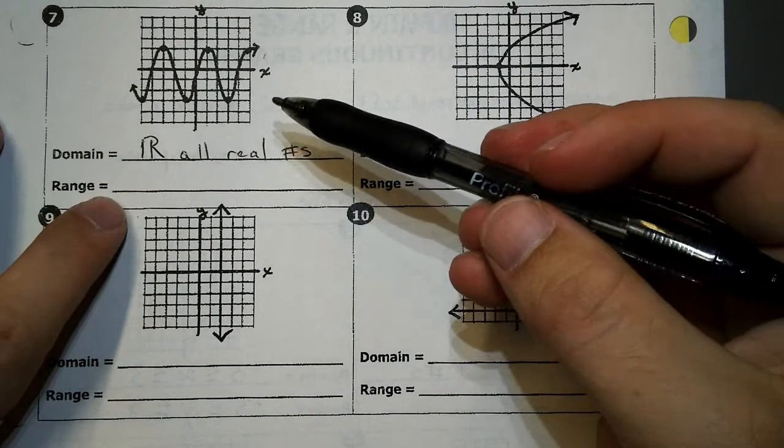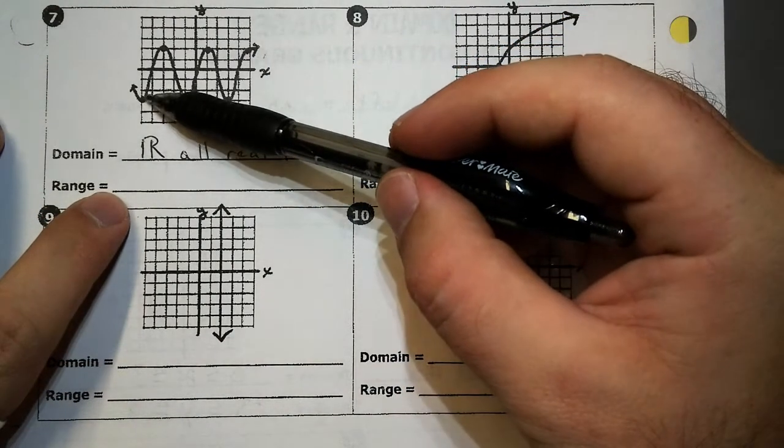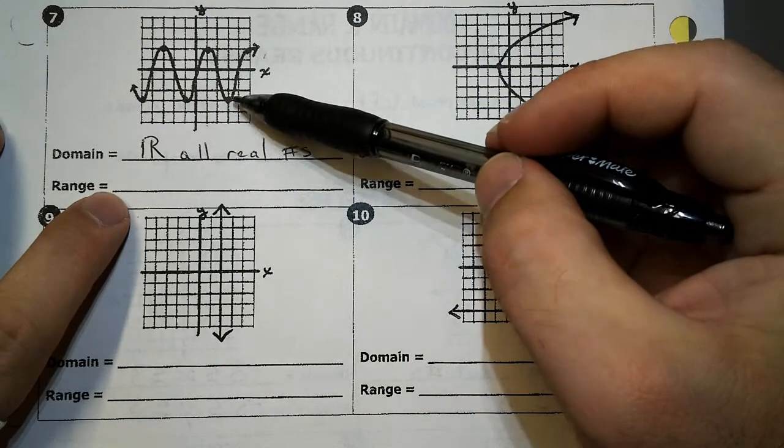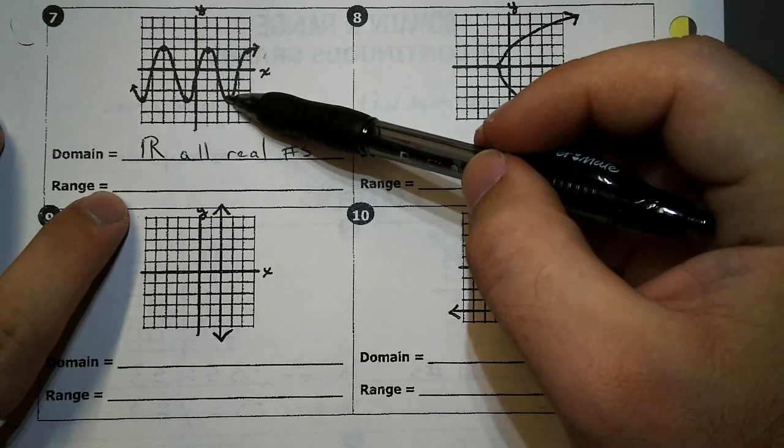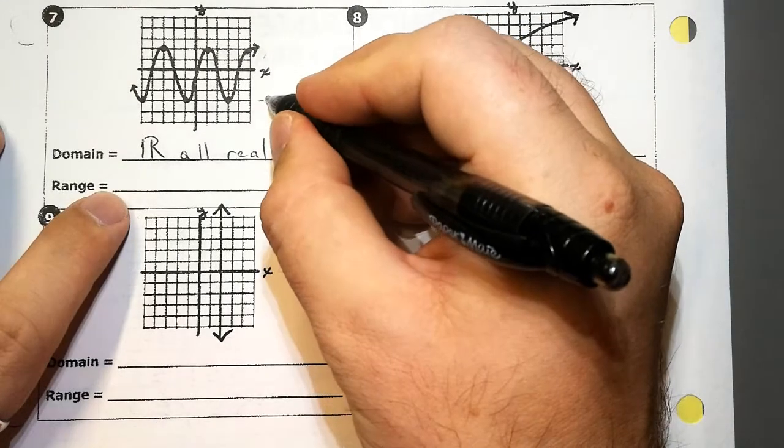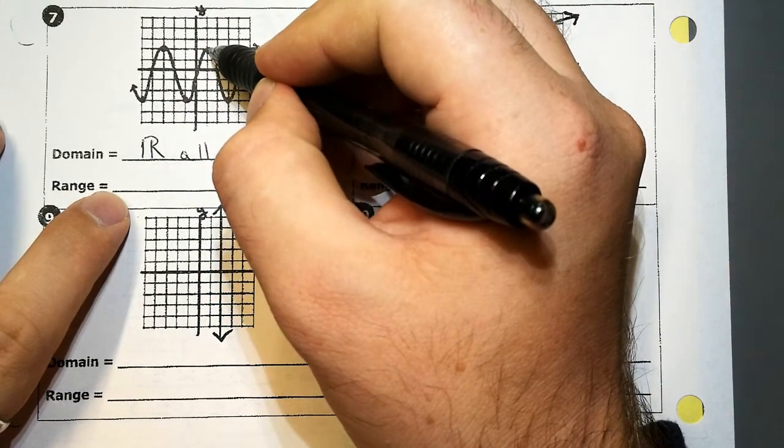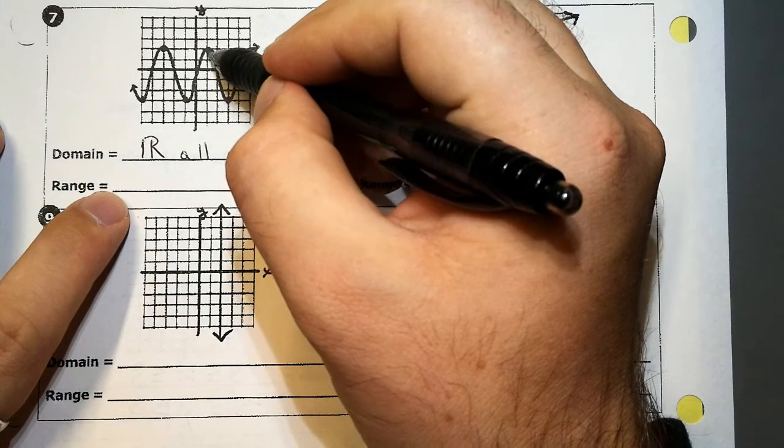Now for the range, does this continue going down forever, or does it stop there? It stops. It stops at negative one, two, negative three. So it stops at negative three. Going up, does it go up forever? No, it stops. And this pattern continues. It stops at positive two.